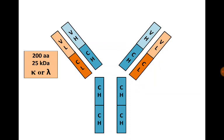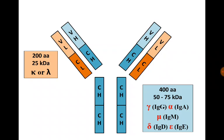A light chain is formed of 200 amino acids, about 25 kDa, and light chains in an immunoglobulin are all either kappa or lambda. A heavy chain is formed of 400 amino acids, about 50 to 75 kDa. Immunoglobulin G contains gamma heavy chains, immunoglobulin A contains alpha heavy chains, immunoglobulin M contains mu heavy chains, immunoglobulin D contains delta heavy chains, and immunoglobulin E contains epsilon heavy chains.